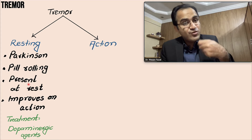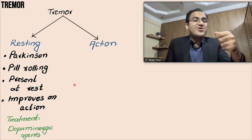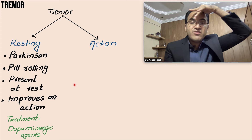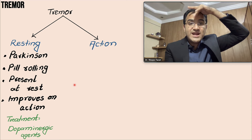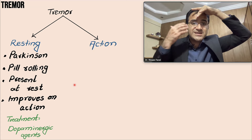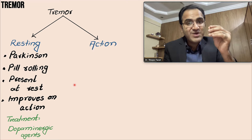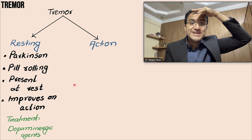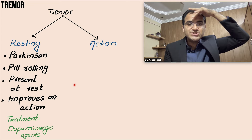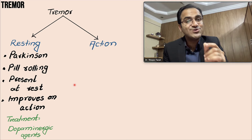Another test you can perform in these patients presenting with a pill rolling tremor or a screwdriver-type tremor is the glabellar tap test. Normally, when you tap the glabella, the person may blink initially, but gets accustomed to it and stops blinking. But in patients with Parkinson's disease, when you keep tapping the glabella, the person keeps blinking continuously because they cannot control it. This is a positive test indicating Parkinson's disease.